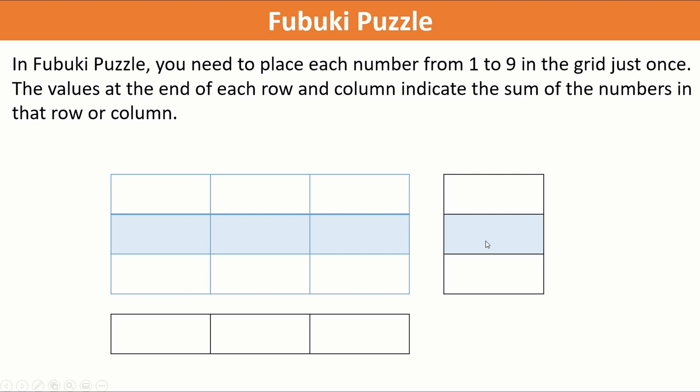The values at the end of each row and column indicate the sums of the numbers in that row or column. So here are the numbers. Boom! Here are the numbers.